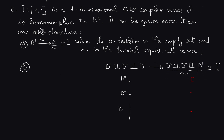It can be given more than one cell structure. The most obvious one: we just take as the discrete set of points on which to start attaching cells the empty set, and then we take the disk D1. We have no attaching maps of D1, so we just take D1. The equivalence relation we quotient by is trivial — each point of D1 is equivalent only to itself. So we have this trivial CW complex structure.